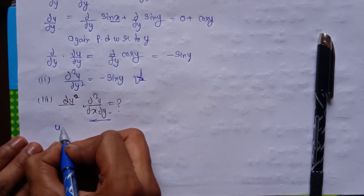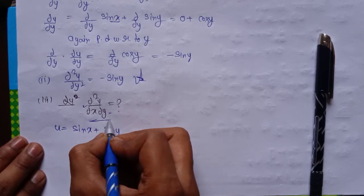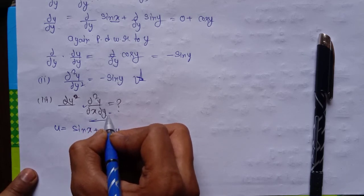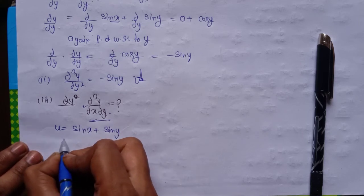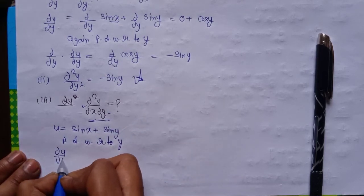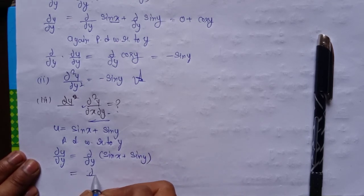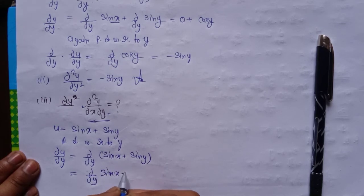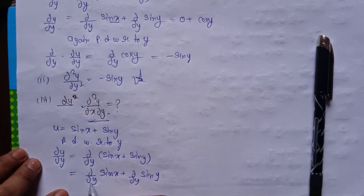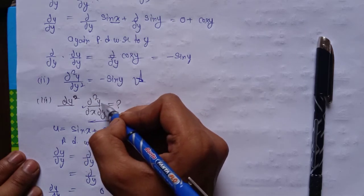So first differentiating u = sin x + sin y with respect to y: ∂u/∂y = ∂/∂y of sin x + ∂/∂y of sin y. Since sin x is constant with respect to y, it gives 0. And ∂/∂y of sin y = cos y. So ∂u/∂y = cos y. Now we need ∂²u/∂x∂y, so we differentiate this result further with respect to x.